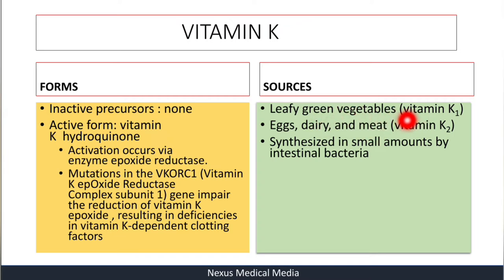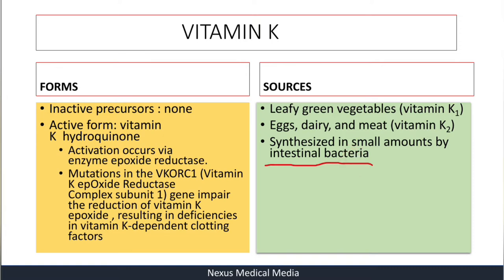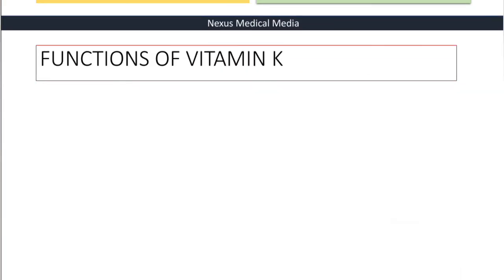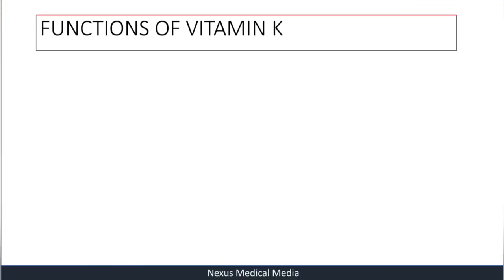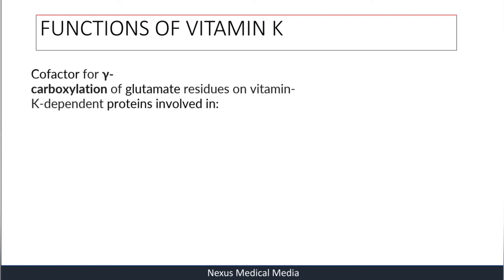There is K1 and K2. From leafy green vegetables you get K1, and from eggs, dairy products, and meat we get Vitamin K2. Vitamin K2 is also synthesized in small amounts by intestinal flora. This is very important and will be relevant when we discuss Vitamin K deficiencies in neonates.